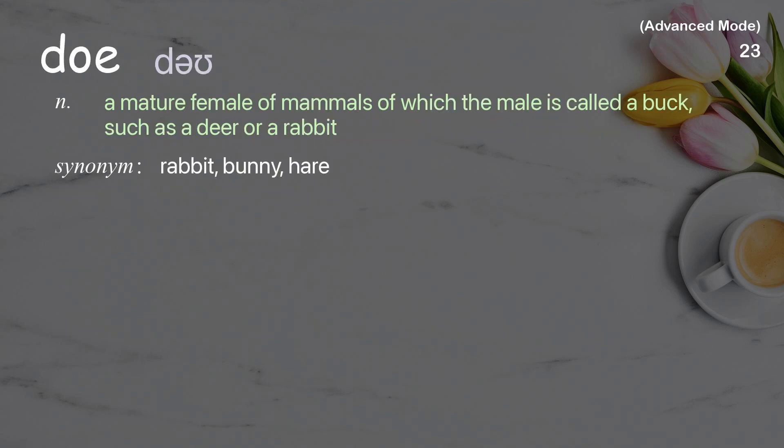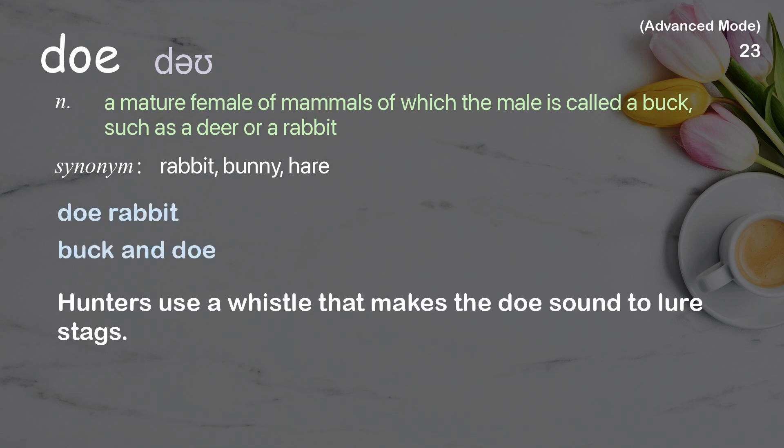Doe: a mature female of mammals of which the male is called a buck, such as a deer or a rabbit. Examples: doe rabbit, buck and doe. Hunters use a whistle that makes the doe sound to lure stags.